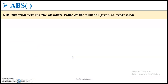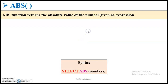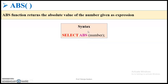Let us start with the absolute function. This absolute function returns the absolute value of the number given as an expression. The syntax is: SELECT ABS(number). Whichever number you give as the parameter to the function will be converted into the absolute value of that number.